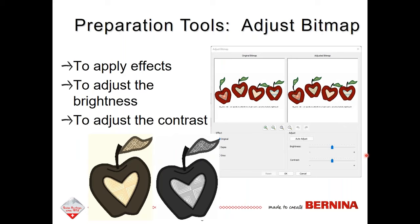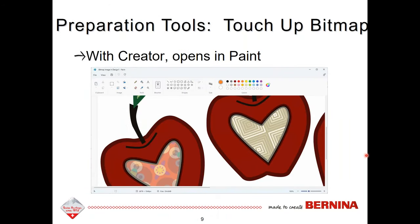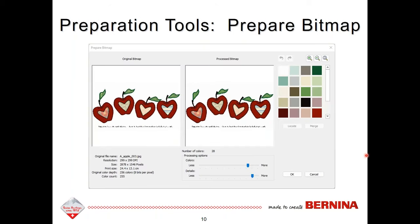Another preparation tool is Adjust Bitmap. This icon takes you to a dialog box where you can apply effects, adjust the brightness or color of the picture, and add sepia tones or grayscale. There's also Touch Up Bitmap in the auto digitizing toolbox — at Creator level, this opens the image in Microsoft Paint for basic editing. The Prepare Bitmap tool opens a dialog where you can reduce colors in an image or sharpen outlines, see all colors picked up, and merge colors or find where colors are located.